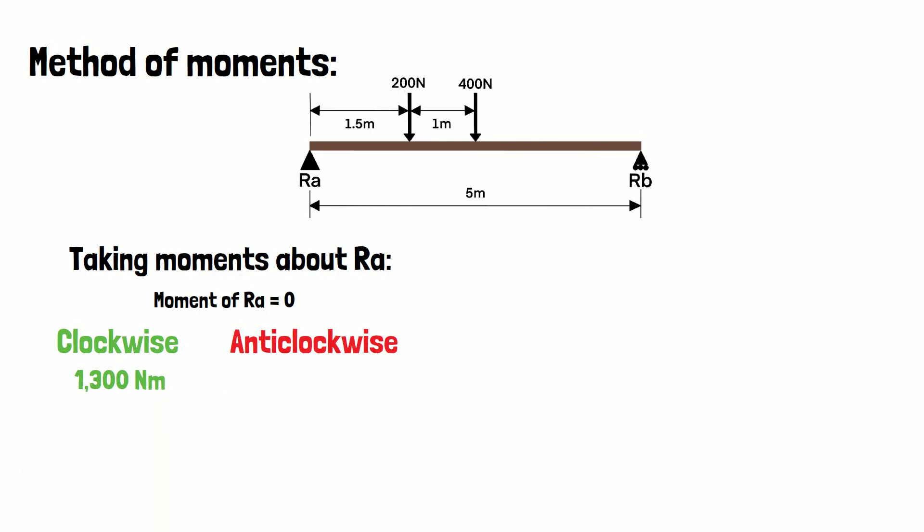In the anticlockwise direction, the only moment we have is the support reaction RB at a distance of 5 meters. Since the beam is in equilibrium, the clockwise and anticlockwise moments must be equal, and therefore we can transpose this to find RB by dividing 1300 by 5, which gives us 260N.